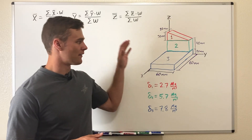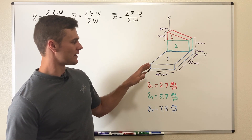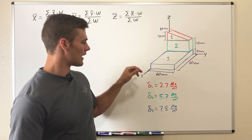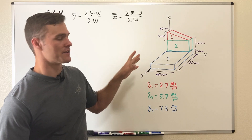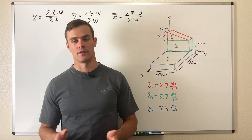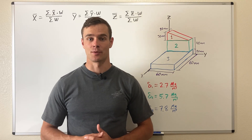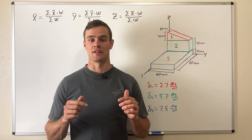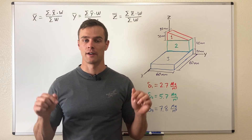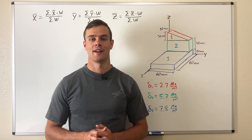What we have here is a 3D object composed of parts that don't all have the same density, and we need to find the centroid of this object — the center of mass or center of gravity; it's all the same thing. I've gotten the steps of what we're going to go over written out down in the description, you can check that out.